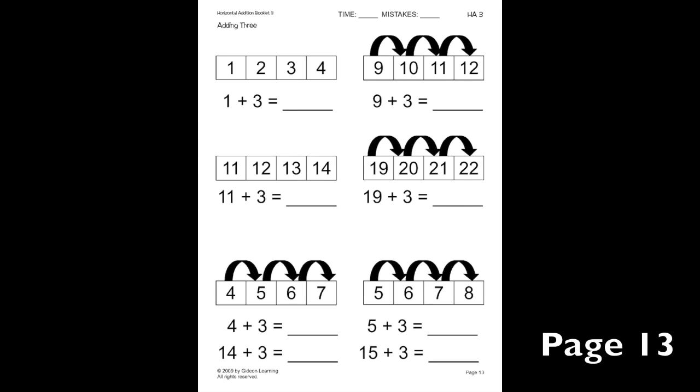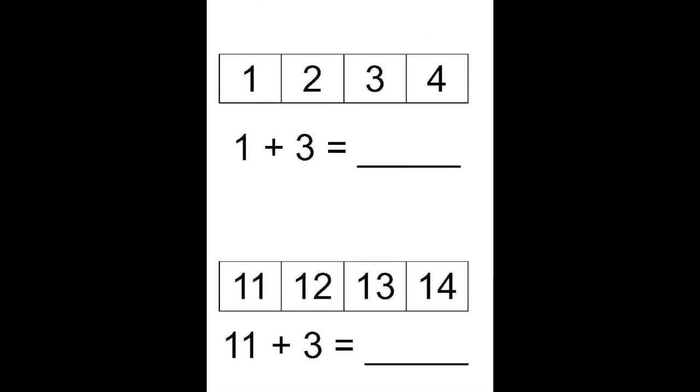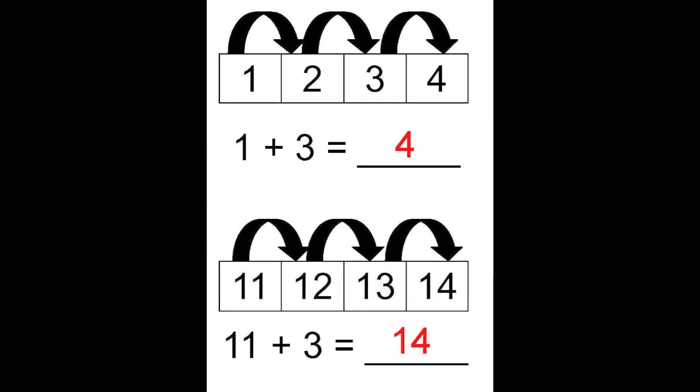Now let's practice adding with double digits. This first problem we have is 1 plus 3. 1 plus 3 is 4. Now the one underneath that is 11 plus 3. 11 is 10 more than 1. So 11 plus 3 is going to be 10 more than 1 plus 3. Our answer for 11 plus 3 is 14, which is 10 more than 4.